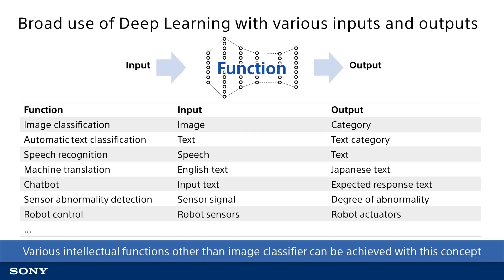This chart shows that many functions can be achieved through a variety of changes to the input and output of the neural network. For typical image recognition, the input is an image and the output is the result of image classification — in other words, the output indicates the type of image.